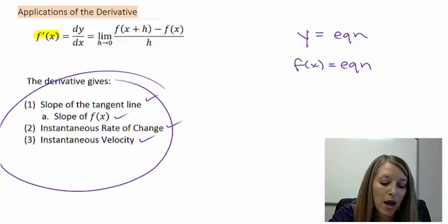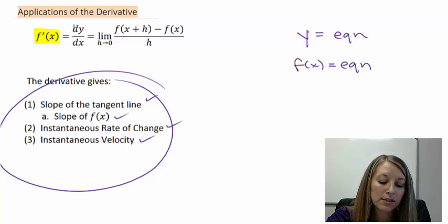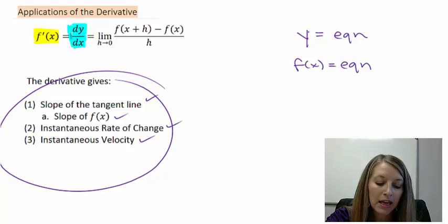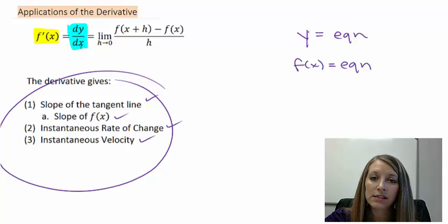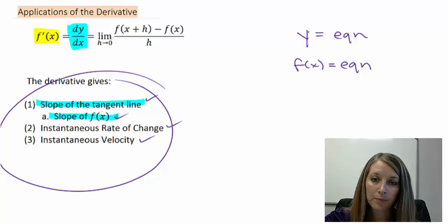We've seen this f prime of x notation, and we've used it a couple of different times in a couple of different examples, but we have not talked about this dy dx notation yet. The dy dx notation is exactly the same thing. It is a notation for the derivative, hence the slope of the tangent line or the slope of the original line.